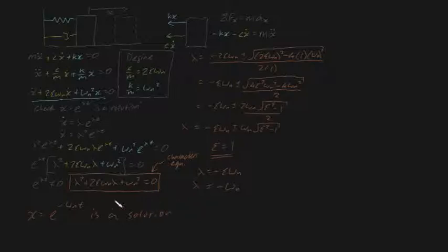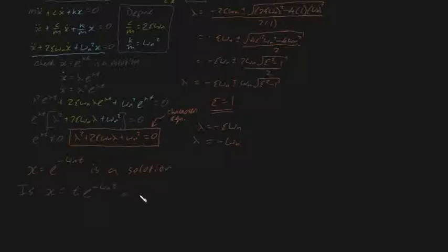We know this is one solution, but we seek to find out whether there's another. We've got one unique solution, but we have a suspicion there might be another. So let me ask: is x equal to t times e to the minus omega n t a solution? Spoiler alert — it actually is, but we need to prove it. To do that, we need to substitute this into our equation and see if the left-hand side equals the right-hand side.